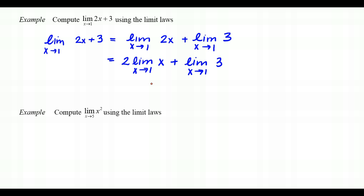We've reduced the problem to two simple limits. The limit as x approaches 1 of x — the identity function — is just 1 by substitution, so the first part is 2 times 1. The limit of the constant 3 is simply 3. Therefore, 2 times 1 plus 3 gives us the final answer of 5.